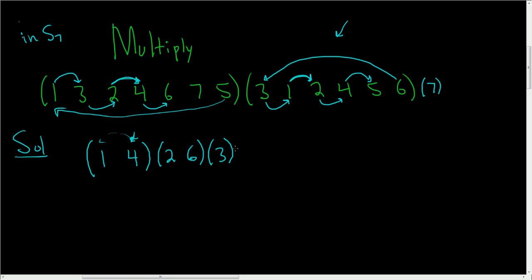The only number we haven't checked, well, there's 2 we haven't checked. We have 1, 4, 2, 6, 3. We still have 5 and 7. Let's go ahead and do 5. 5 goes to 6, but then 6 goes to 7, so 5 goes to 7. And then 7 goes to 7, but then 7 goes to 5. So 7 goes back to 5. So we close this.